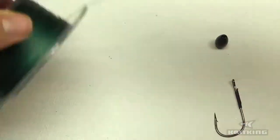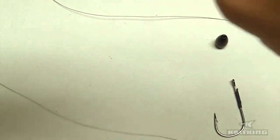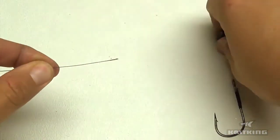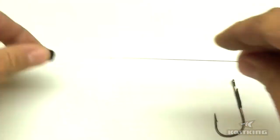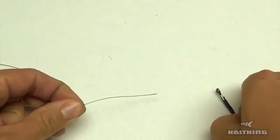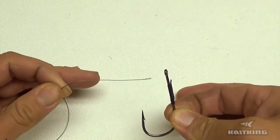So just take your braid or fluorocarbon or whatever line you're using. I'm going to put a weight on this too just to demonstrate something at the end here. Okay, so take your hook. You always want to put your line through the front of the hook with the side with the point.